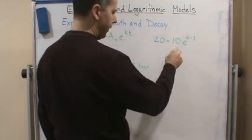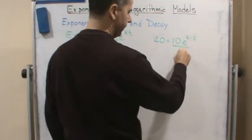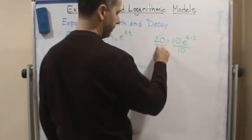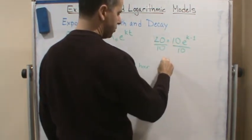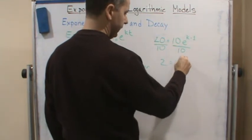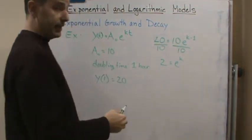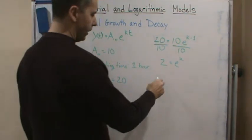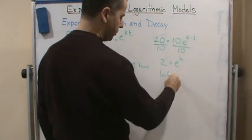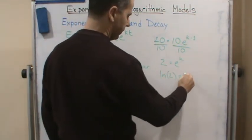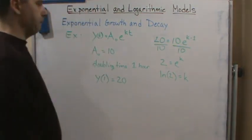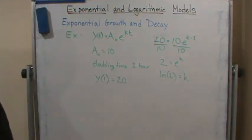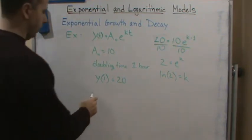I'm going to divide both sides by 10, and I get 2 equals e to the k. And if I take the natural log of both sides, I get the natural log of 2 equals k.